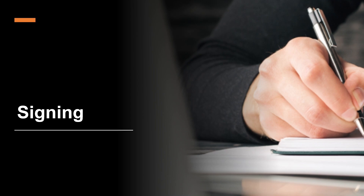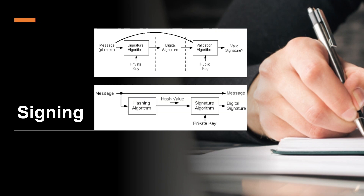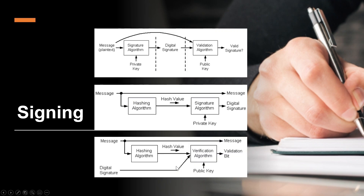There are two steps involved in creating a digital signature from a message. First, a hash value is created from the message. In the second step, the hash value is signed using the signer's private key. At the receiving end, the message is hashed again and verified against the digital signature, which is decrypted using the public key. If they match, you can be confident that the message is the same one the signer originally signed and that it hasn't been tampered with.